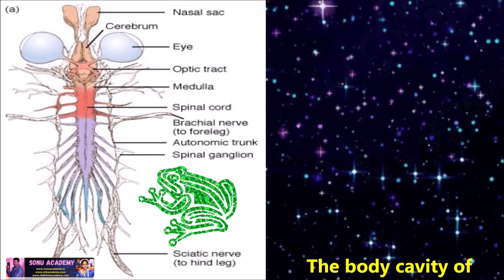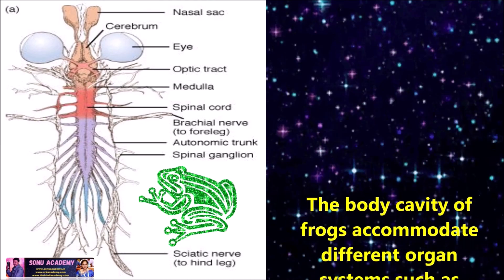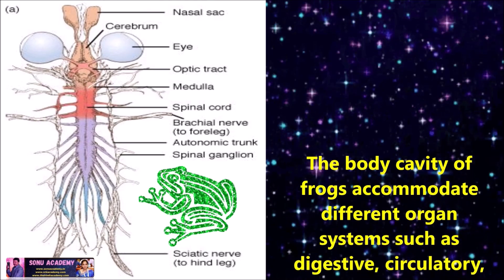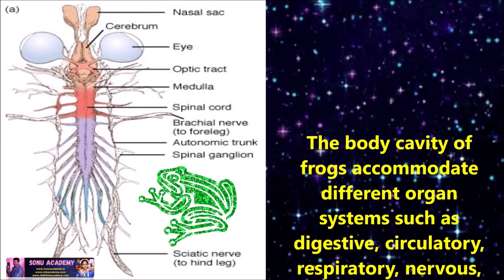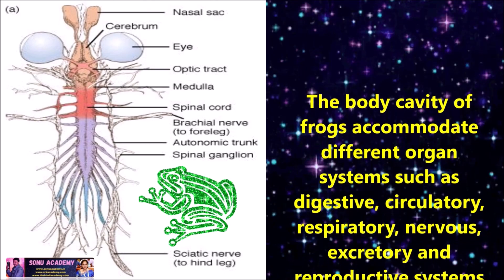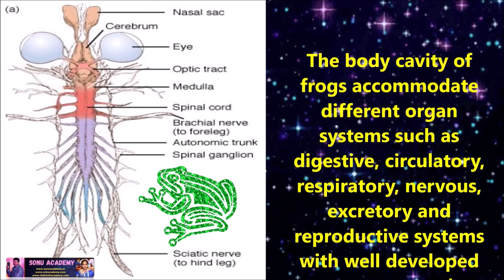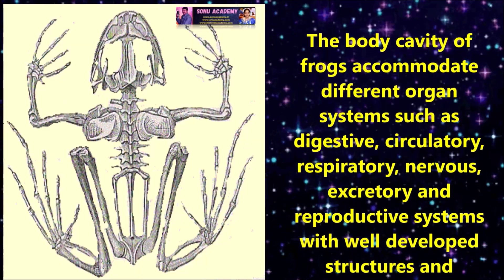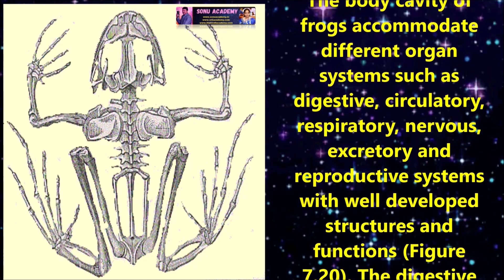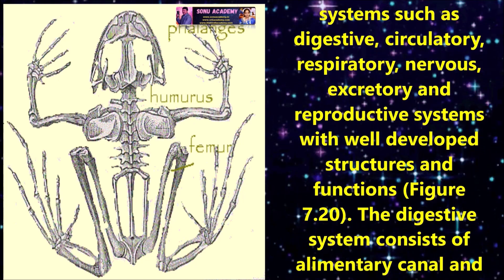Now let us discuss the anatomy of the frog. The body cavity of the frog accommodates different organ systems such as digestive, circulatory, respiratory, nervous, excretory, and reproductive systems, with well-developed structures and functions.